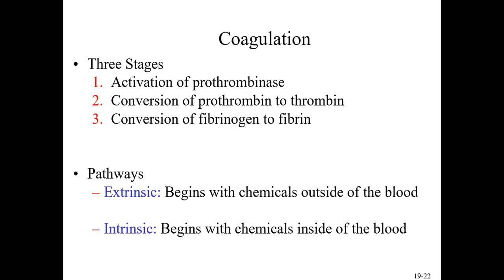There are three main stages of coagulation. First, an enzyme called prothrombinase is activated. Second, prothrombinase converts prothrombin into thrombin. Third, thrombin converts fibrinogen into fibrin. Fibrinogen is normally present in the bloodstream in an inactive state, but once thrombin is present, it's converted into the sticky, dense fibrin protein that forms the actual clot.